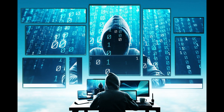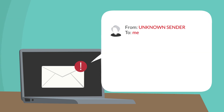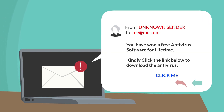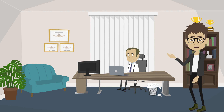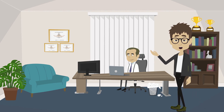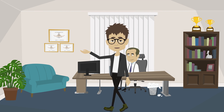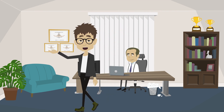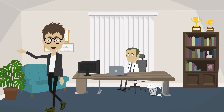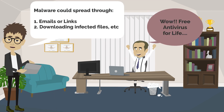Here we see a person opening an email with an attachment from an unknown sender. This person is about to fall for a malware attack. In a malware attack, an attacker uses malicious software such as a virus or a trojan horse to gain unauthorized access to a computer or steal sensitive information. Malware can spread through emails with attachments or links, or through downloading infected software or files from the internet.